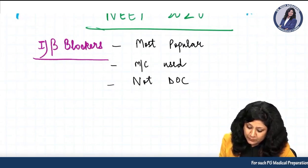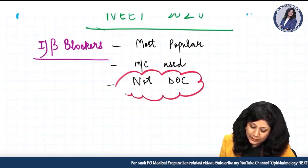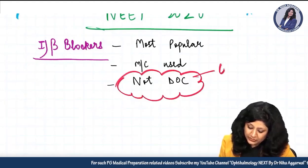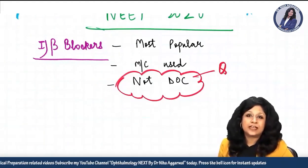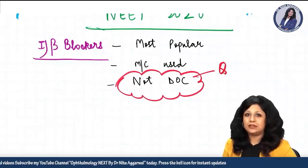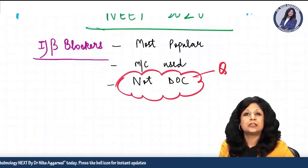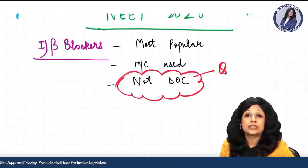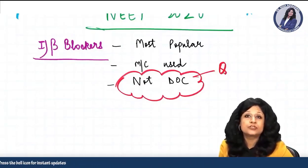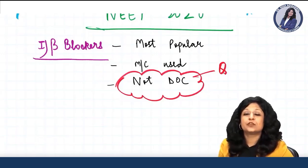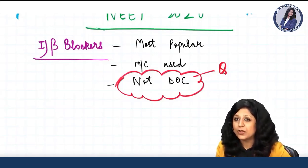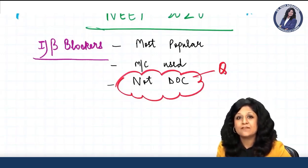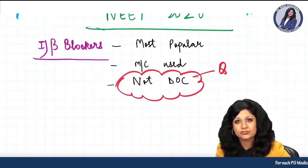It is very important that these drugs are not the drug of choice because of certain contraindications and certain problems with beta blockers — you cannot use these drugs with certain conditions. That is why now it is not the drug of choice. Previously, it was the drug of choice.